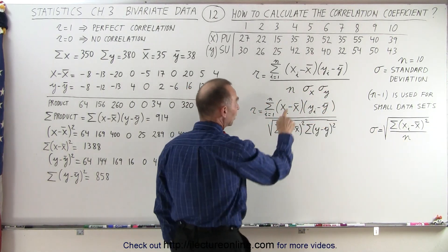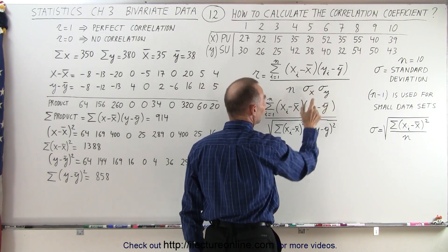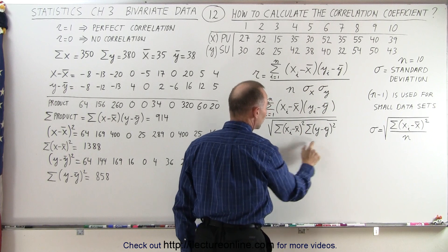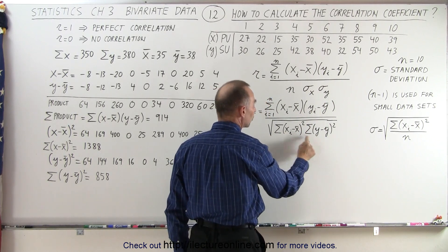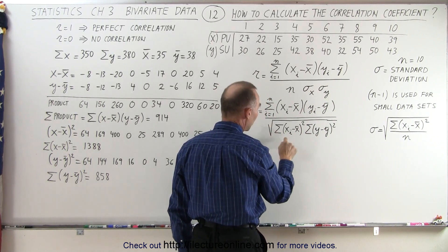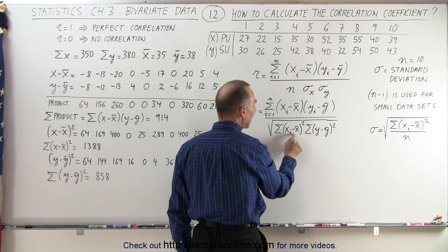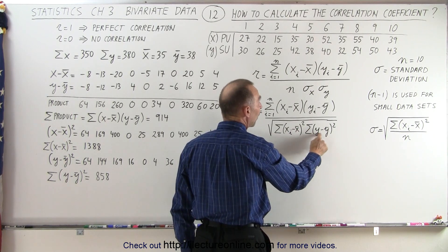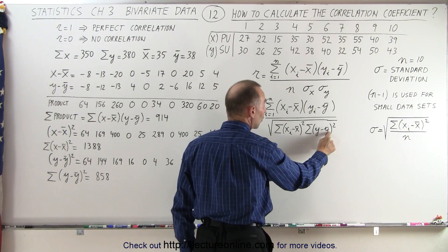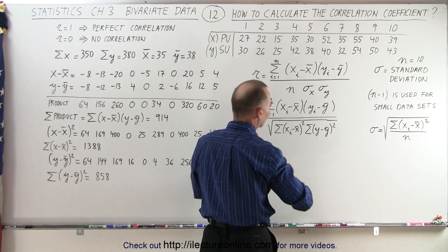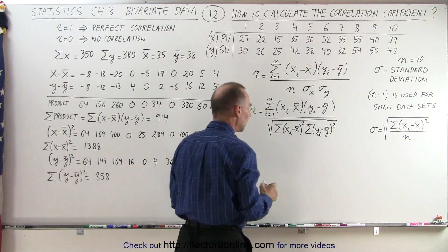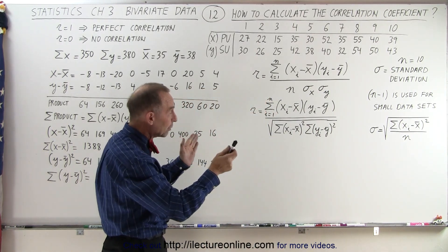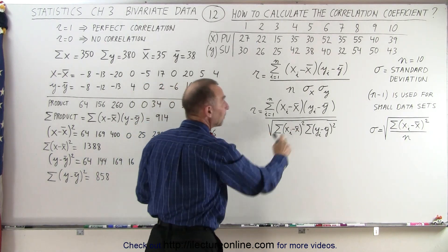If you look at n times the standard deviation of x times the standard deviation of y, you can simplify the denominator to simply being the square root of the two sums multiplied together: the sum of (xi minus the average of x) squared, and the sum of (yi minus the average of y) squared — multiply those together and take the square root, and that becomes the denominator.